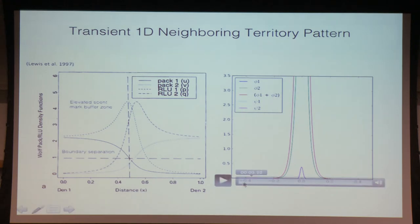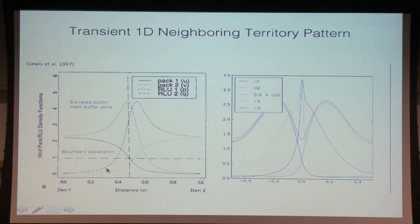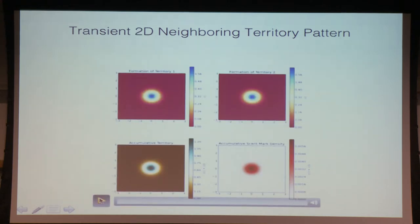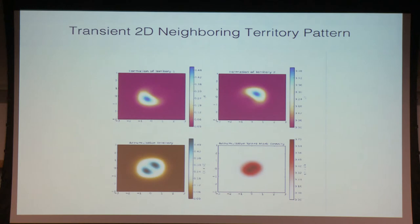So, if we allow individuals to start from the same location at time zero and let it evolve, we will eventually converge on the predicted steady-state solution. And in two-dimensional space, you have individual one, individual two, cumulative space use, and the lower right is the cumulative scent mark density. So, you almost get sort of a cell division-like picture going on here.